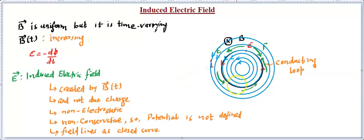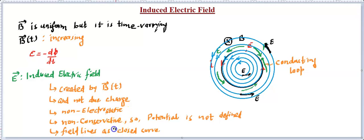Electrostatic field lines used to be open lines that would originate and terminate at points. If you want the field direction at any location, simply draw a tangent to the field line in the sense of the arrow — that is the direction of the field. All standard properties of field lines remain valid: they do not intersect, the tangent gives direction, and density indicates the magnitude of the induced electric field. The key difference is they are closed curves, non-conservative, and potential cannot be defined.